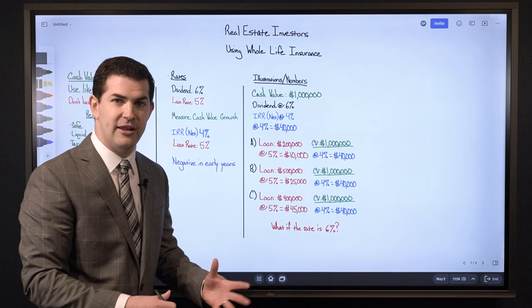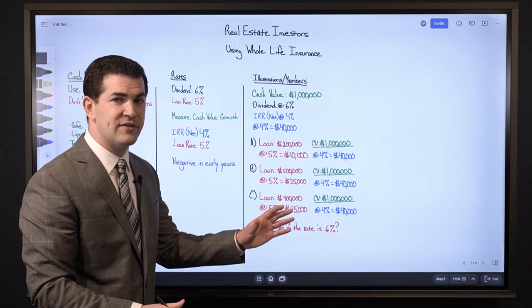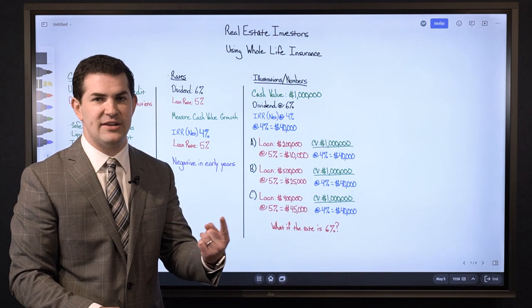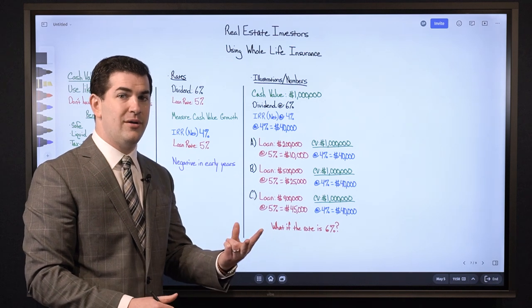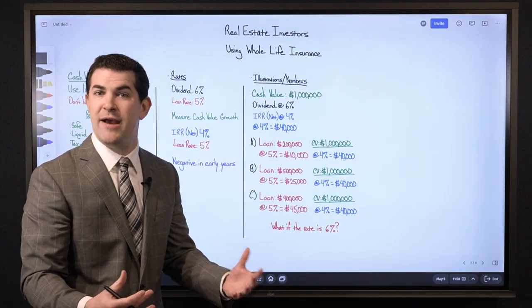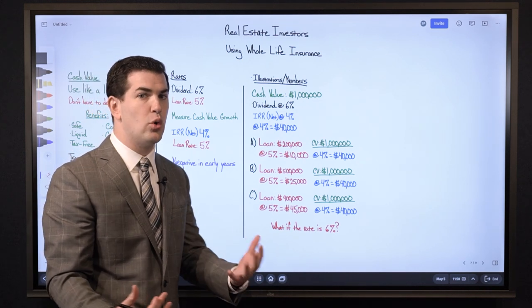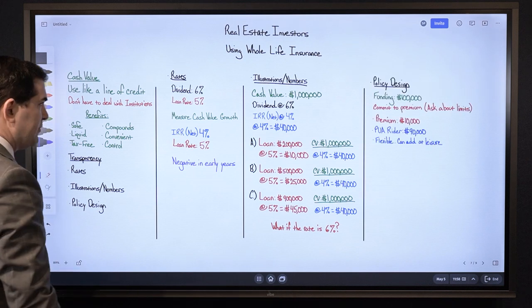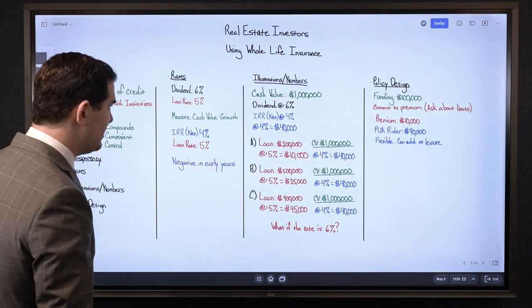To see the total gain — the actual cash value growth year over year — this is often not displayed on your annual statement or your online account. For our clients, we run these numbers because we have to. We receive the dividends from the insurance company, but unfortunately not the total growth breakdown. Companies in the industry are not there yet.